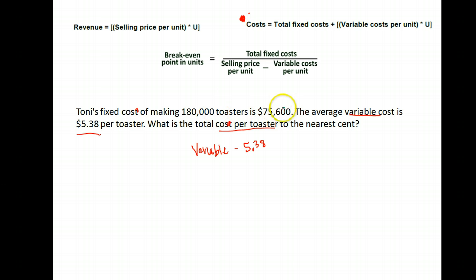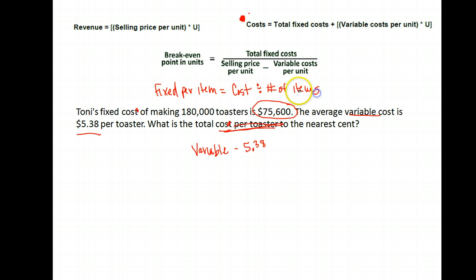The fixed costs total seventy-five thousand six hundred dollars, but they want the cost per toaster. To find the fixed cost per item, you take the total cost and divide it by the number of items. We made 180,000 toasters and it cost seventy-five thousand six hundred dollars, so the fixed cost per item is seventy-five thousand six hundred divided by one hundred and eighty thousand. When we do that division we get point four two — so the fixed cost per toaster is forty-two cents.